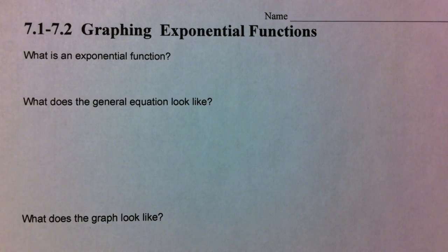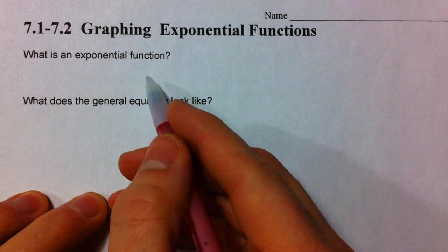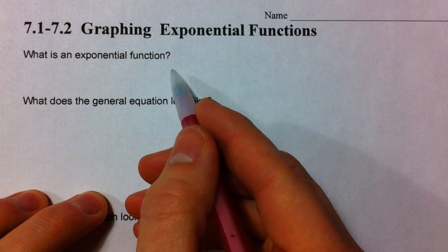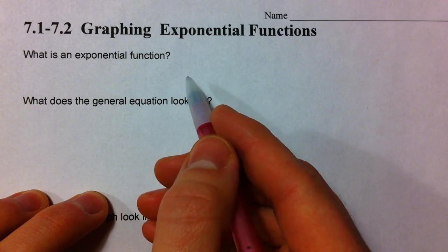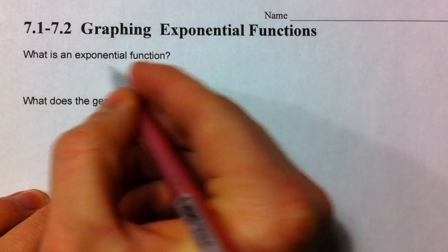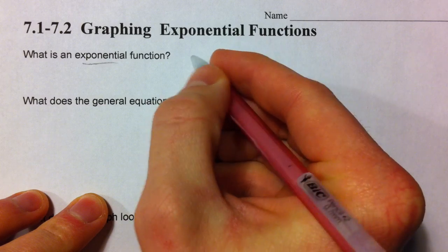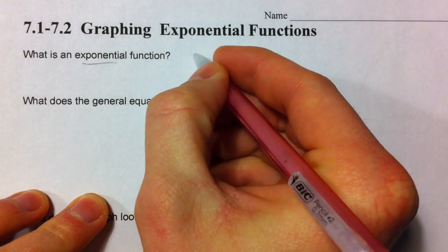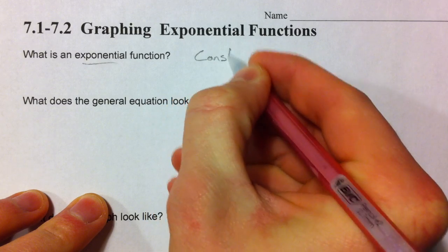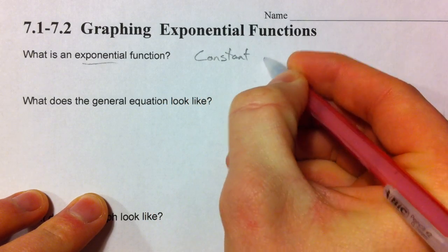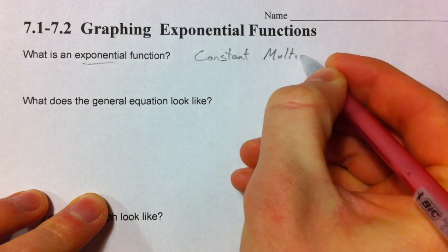All right, in the last video we talked about how we multiplied by three repeatedly, or we multiplied by one-half repeatedly. And so exponential functions, what makes them an exponential function is that they have a constant multiplier. That's what makes it special.